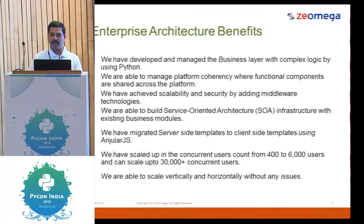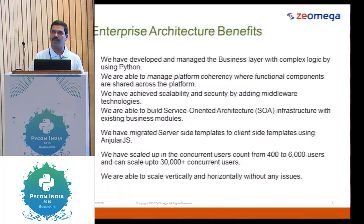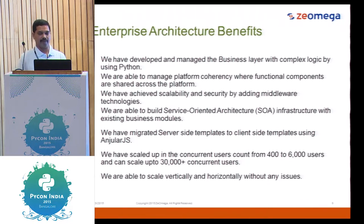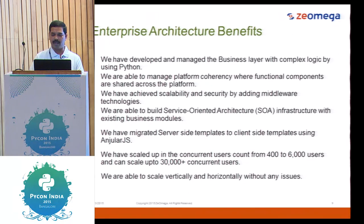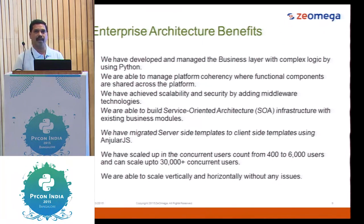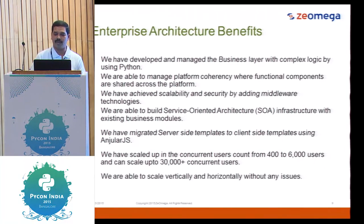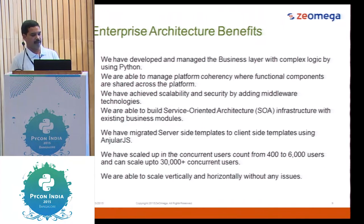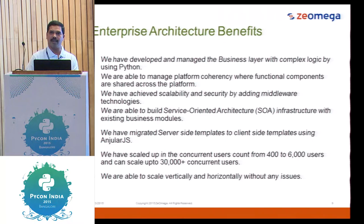We also built a service-oriented architecture using the middle layer, which helped us convert any format to any format. For our core business logic, we convert everything internally to JSON format and scale using RabbitMQ. We moved from server-side template language to client-side template language — AngularJS — which took over a year to convert. With the current deployment using four servers, we are able to scale and support up to 6,000 users. We are confident we can support 30,000 concurrent users, to be validated with sizing, hardware resources, and horizontal/vertical growth planning.